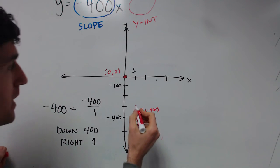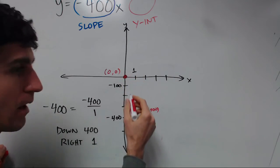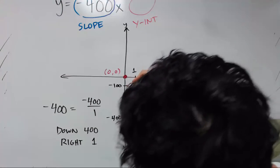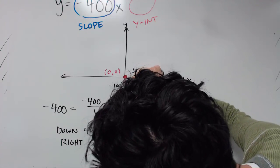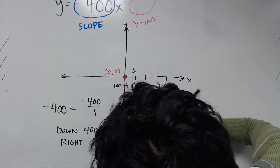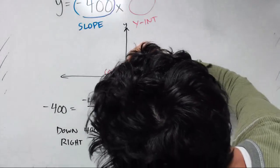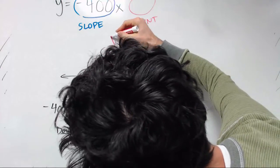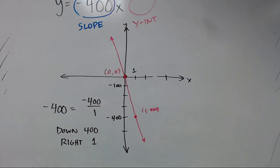We got our second dot. So again, we'll just do a nice straight line connecting these. And there's our graph. That's all there is to it.